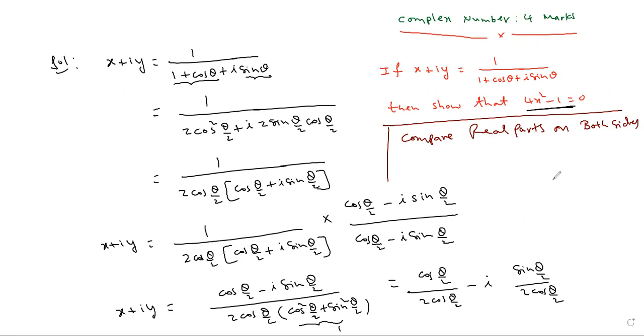If you compare real parts on both sides, x is equal to the real part. 2x is equal to 1. Now squaring on both sides, 4x square is equal to 1.